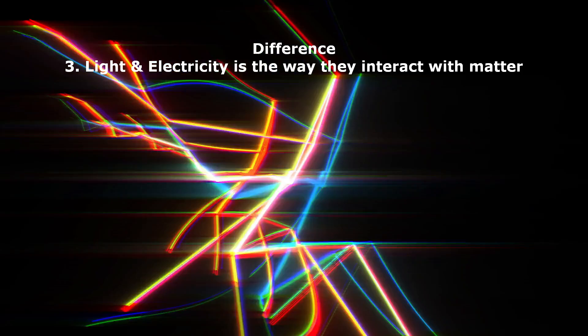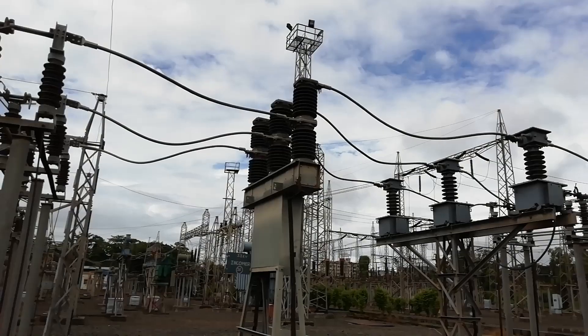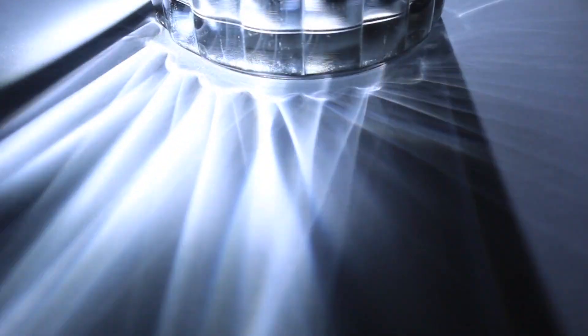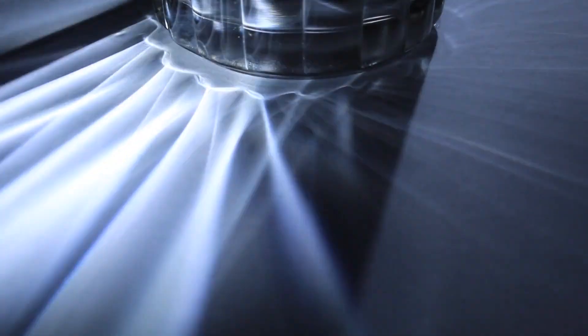A third difference between light and electricity is the way they interact with matter. Electricity can flow through conductive materials such as metals, while light can be absorbed, reflected, or refracted by matter.